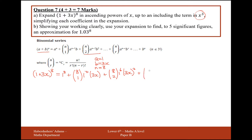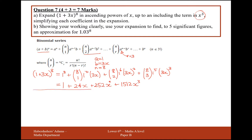And then for the final term, it's plus 8 choose 3. What we're doing here is using the expression where r is 3, and we're doing 1 to the 5 and 3x to the power of 3. Cracking our calculator open: the first term is 1, the second is 8 times 3 which is 24x, the next is 8 choose 2 times 9, giving 252x squared, and the last is 8 choose 3 times 3 cubed, giving 1,512x cubed. That's part A complete.